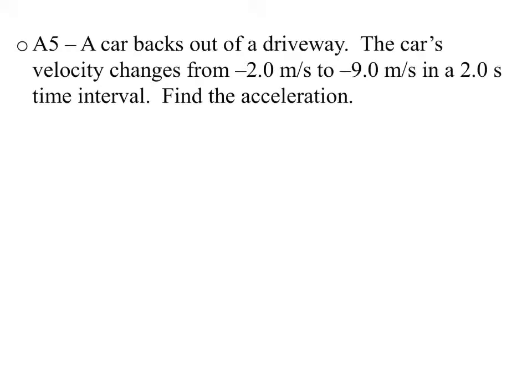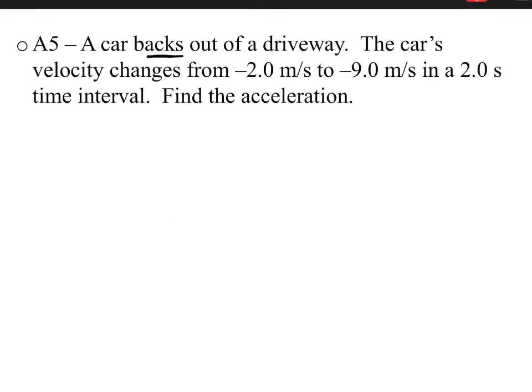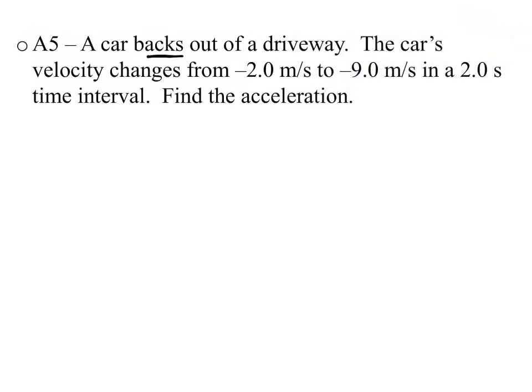So let's do an example. We have a car backing out of a driveway. Backing out means I want negative velocities, because backwards we always say is negative. The car's velocity changes from negative 2 meters per second to negative 9 meters per second. So negative 2 meters per second is our initial velocity, and negative 9 meters per second is our final velocity. Don't let the negatives fool you — this is actually going from slower to faster; it's just going backwards. That's all the negative means.